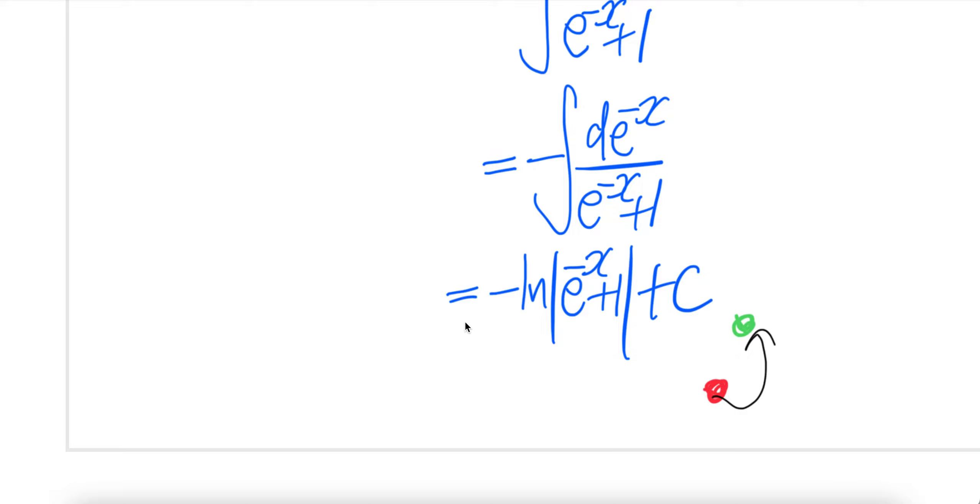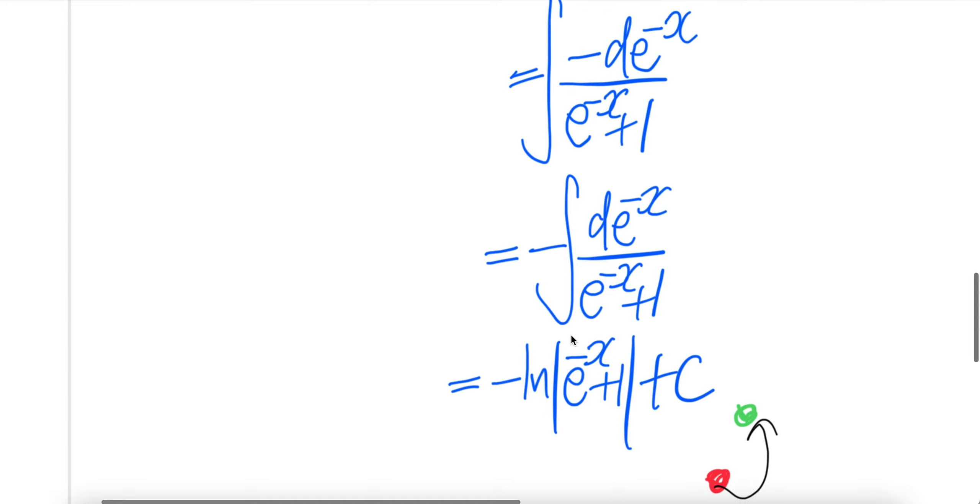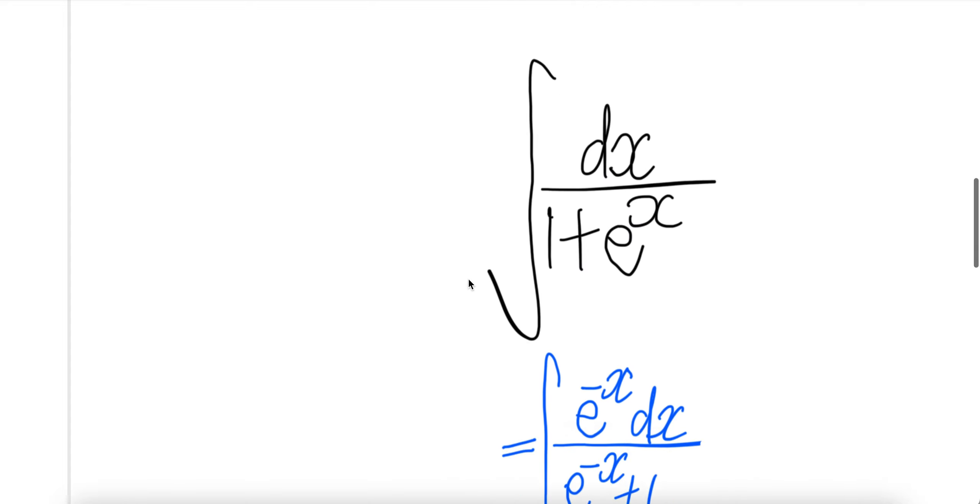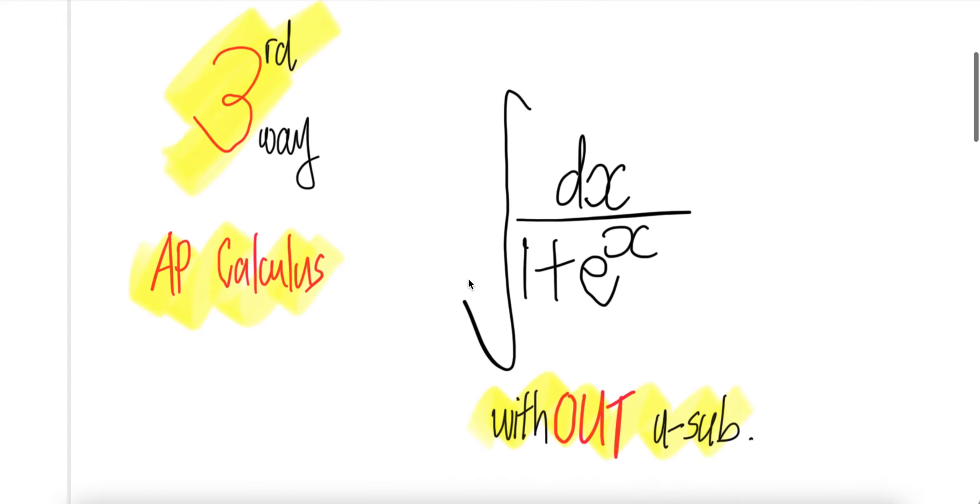which is the same answer. So even though this one looks different, you can make it the same as the result you get in the first two integrals. Okay. If you still cannot see that, let us know. And then we will make a video how to get from here, from this result to the result you get in the first way. Done.